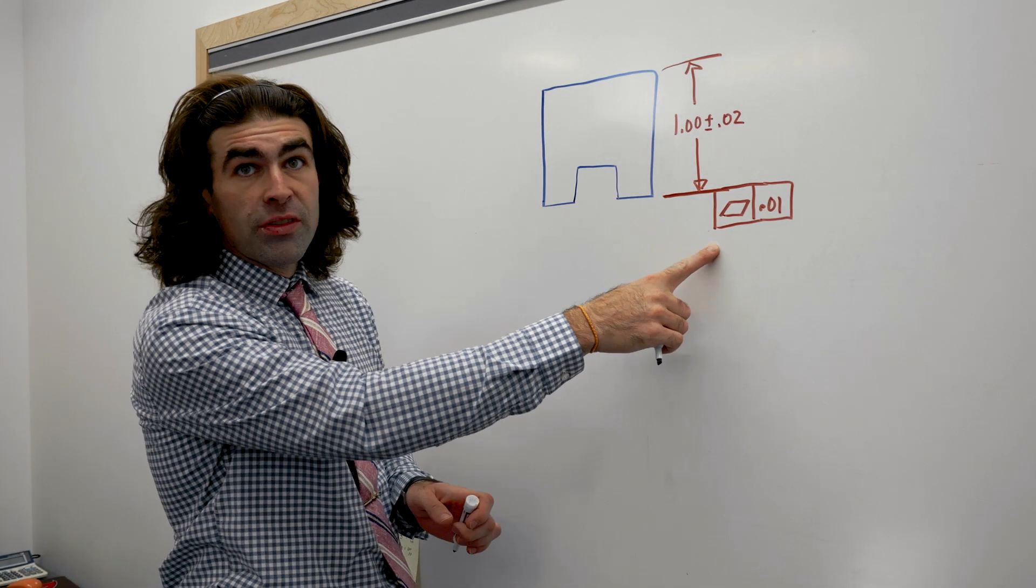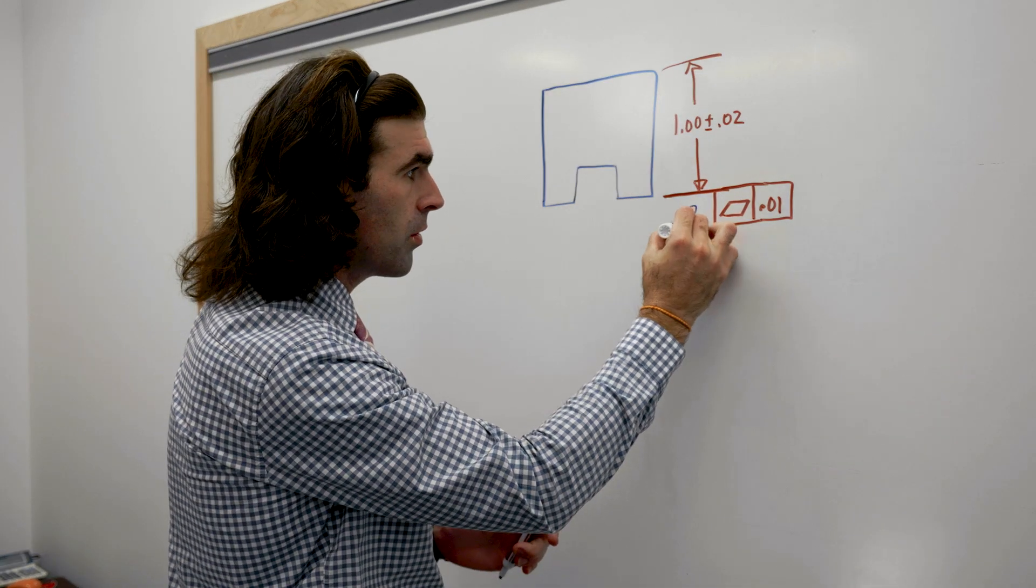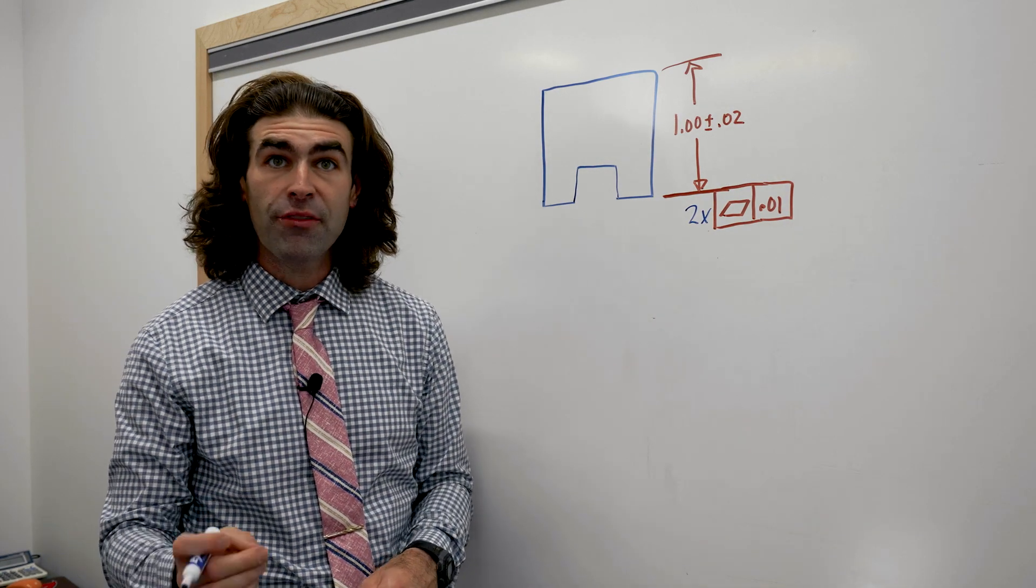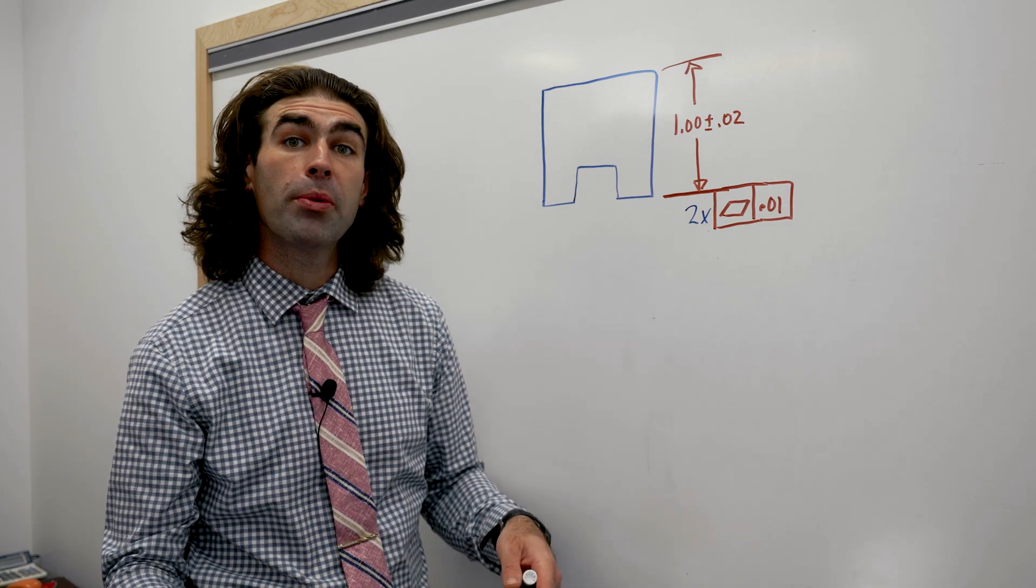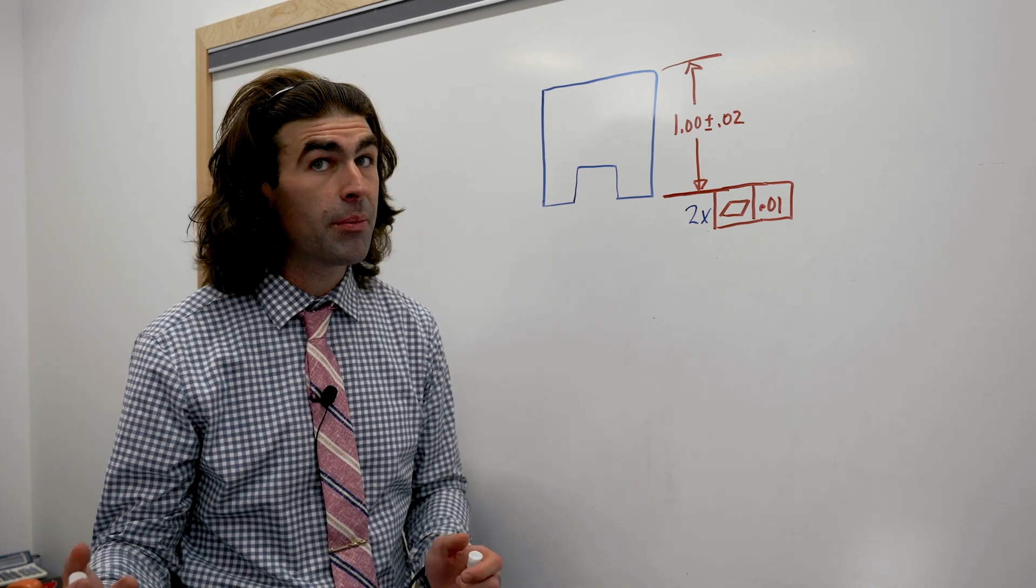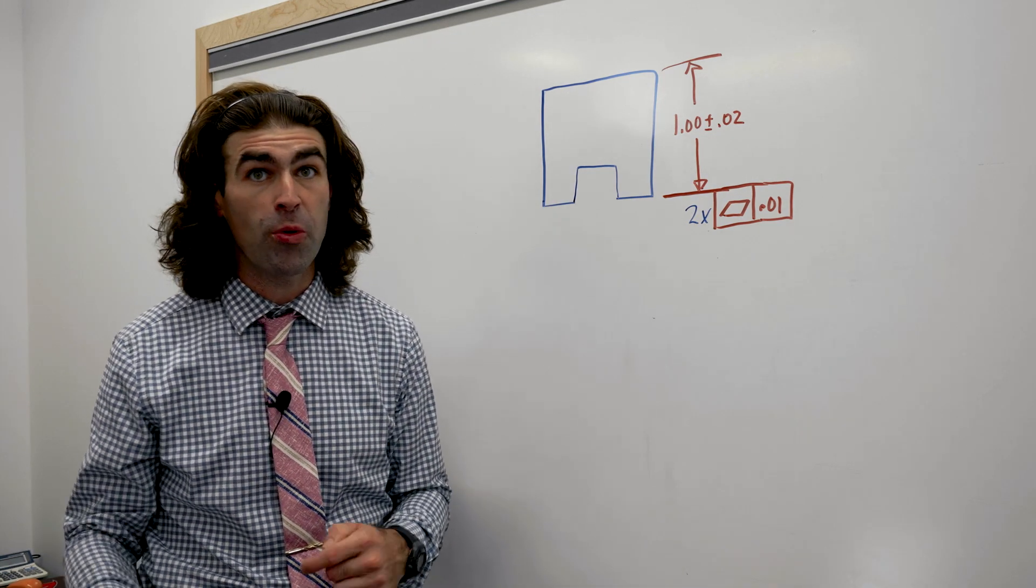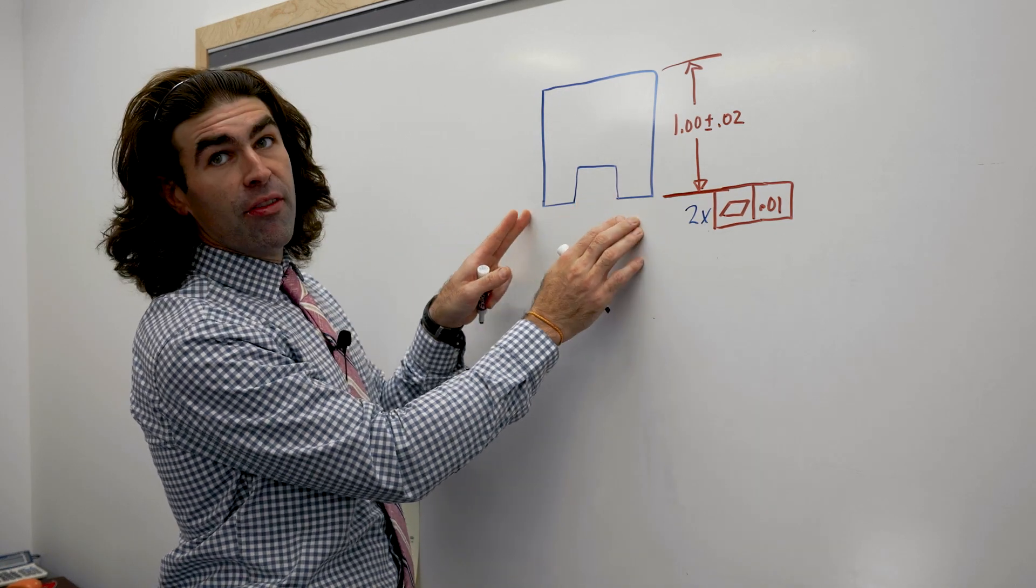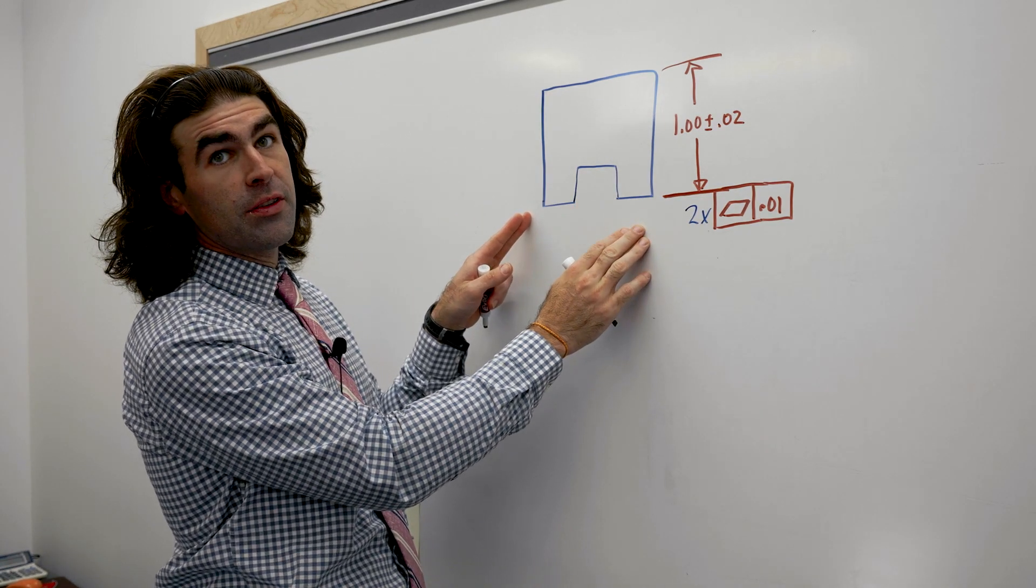Now if you just leave the drawing the same or you could add the two times to the flatness, now that flatness does not control the coplanarity. Now it might matter, it might not. Again, I have a whole video about coplanarity. But what I'm trying to get at, you can have unintended consequences with this part.